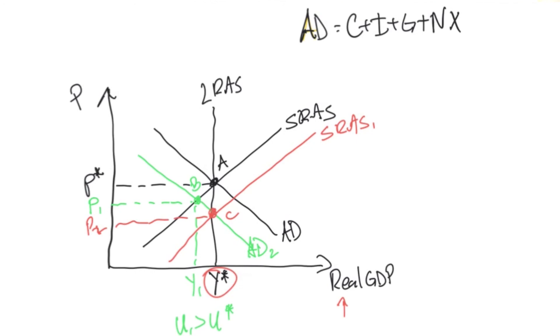But most importantly, our real GDP is still the same. So we're producing the same amount of goods and services as a result. And that's how the economy returns back to equilibrium.